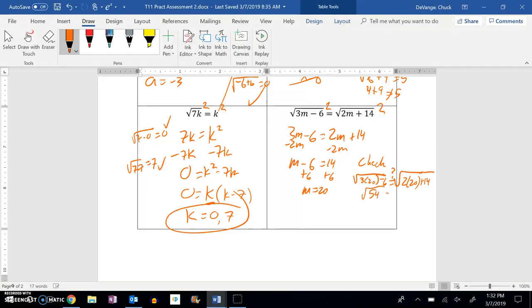60 minus 6. That's the square root of 54. 40 plus 14. That's the square root of 54. It works. So that's my answer.